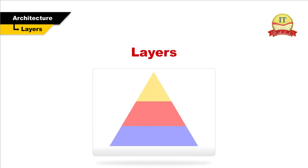Layers: An application system consists of three logical layers — presentation layer, business logic, and data access layer. This diagram is a logical representation of an application system. When a system is physically implemented, application system components can be physically deployed on different computer systems.